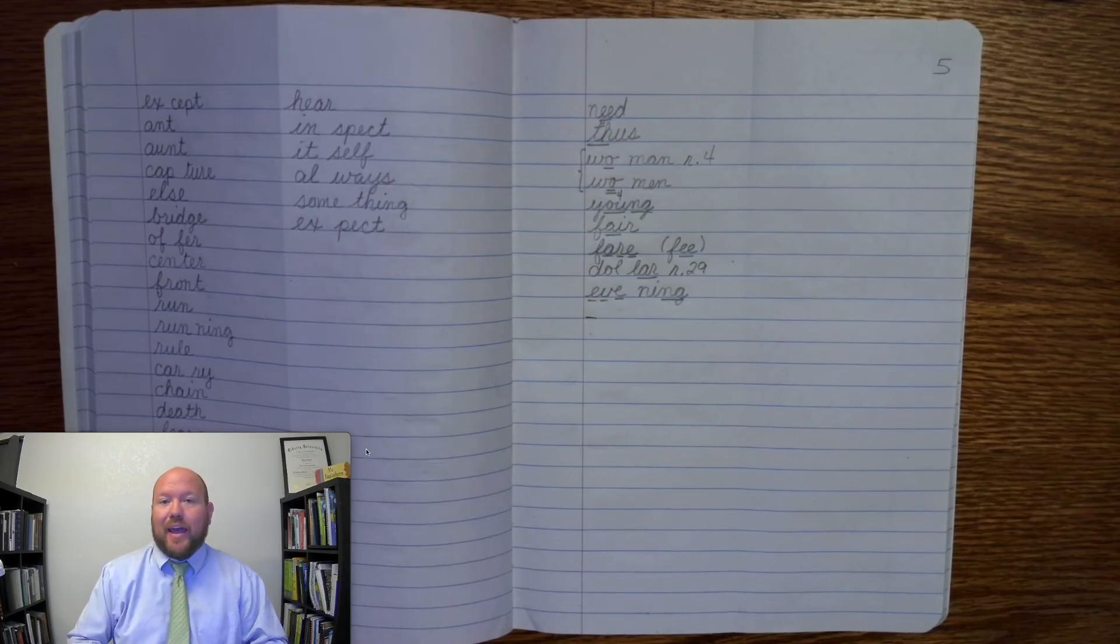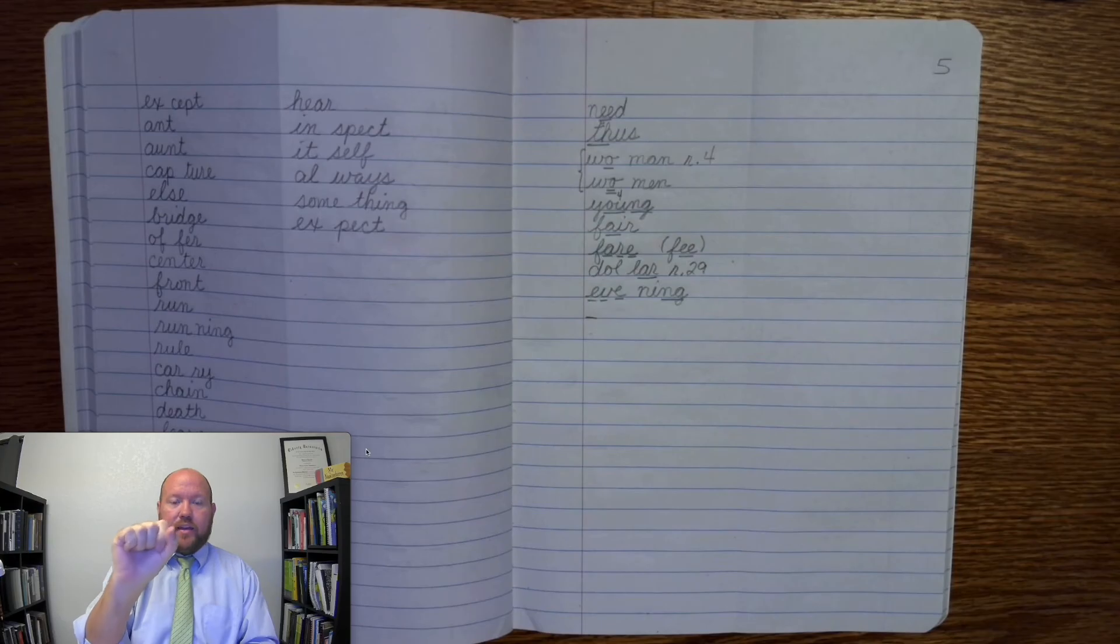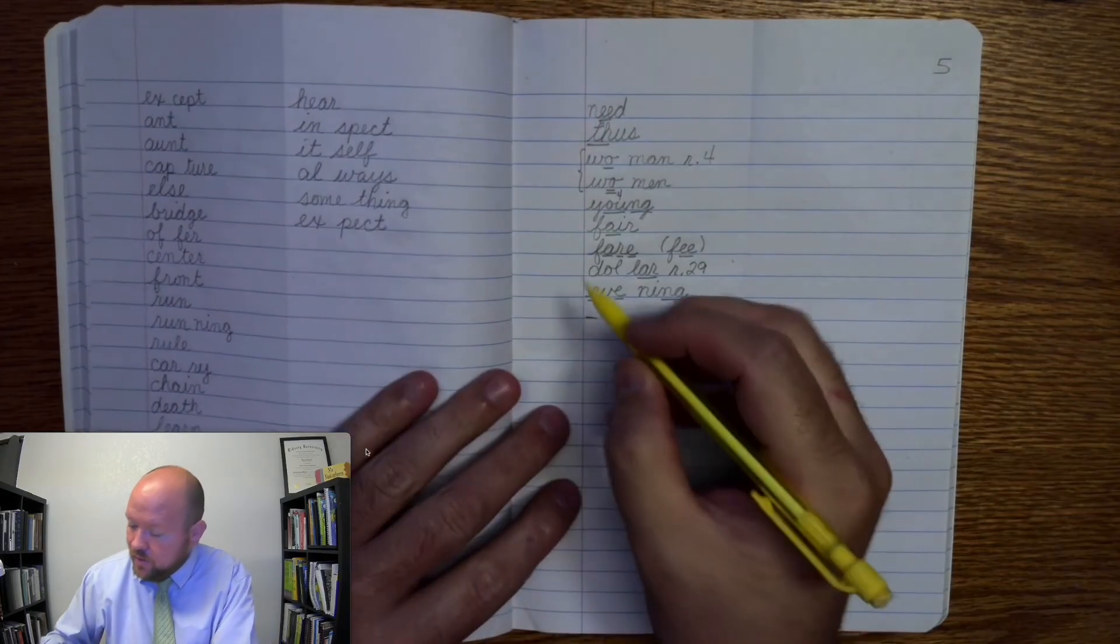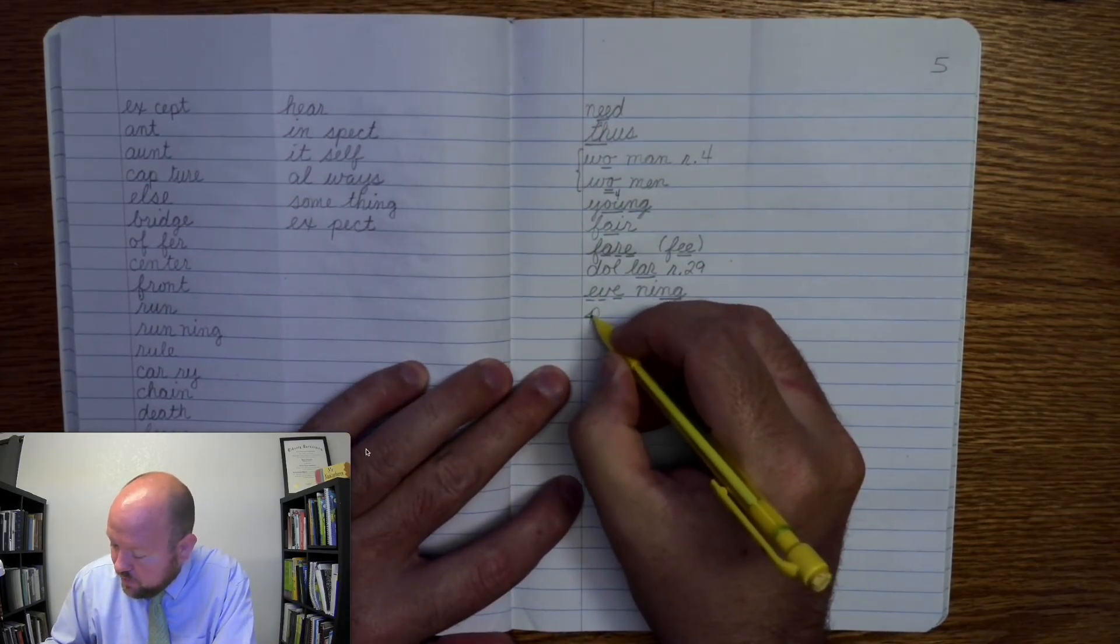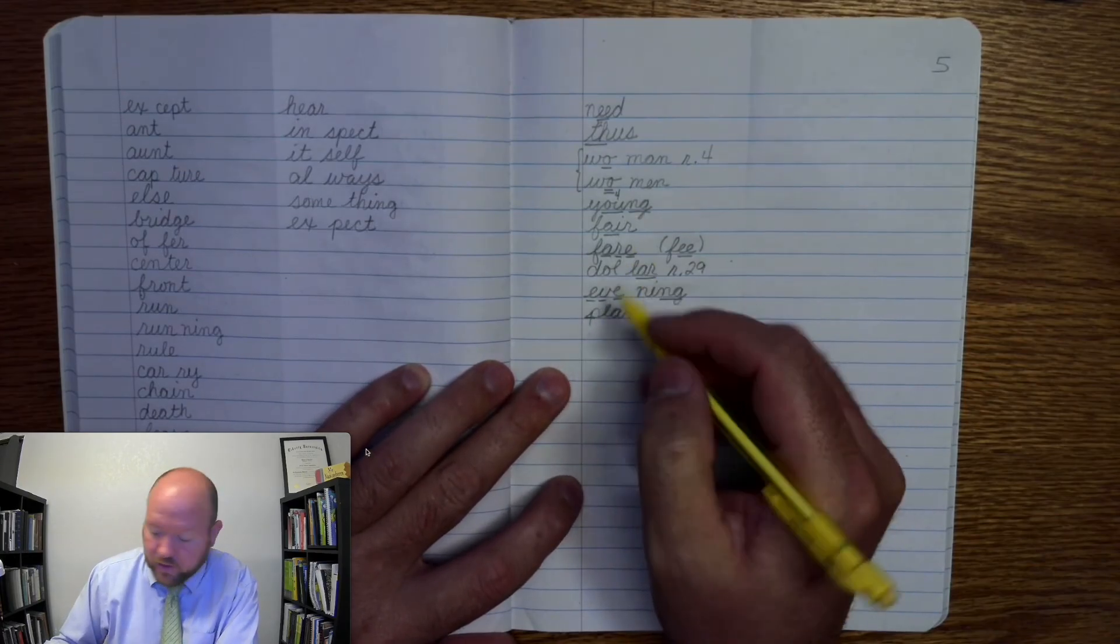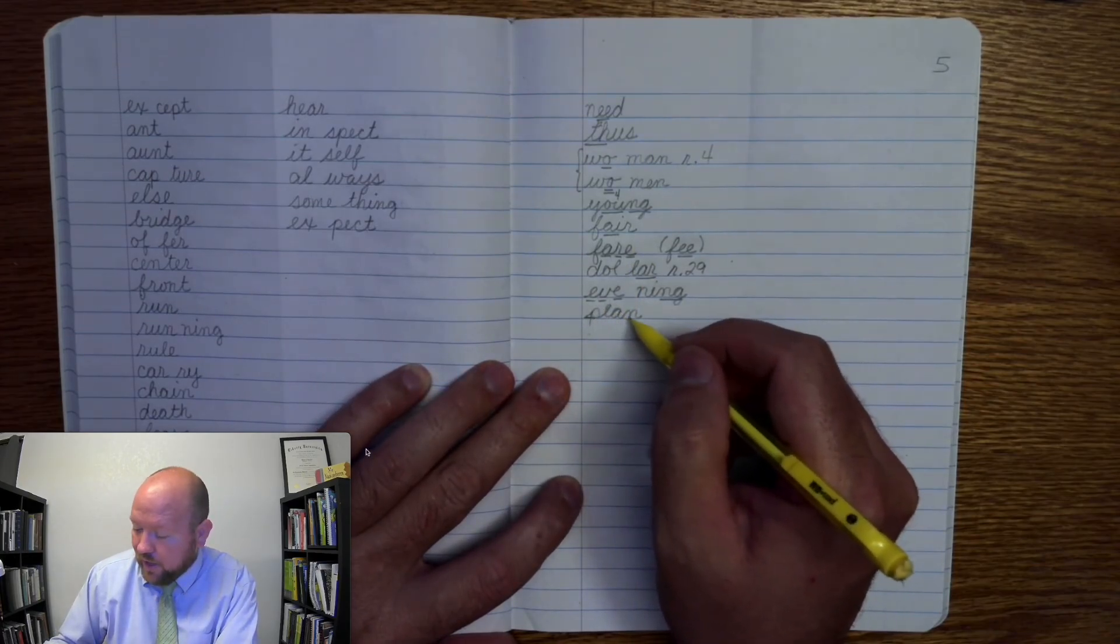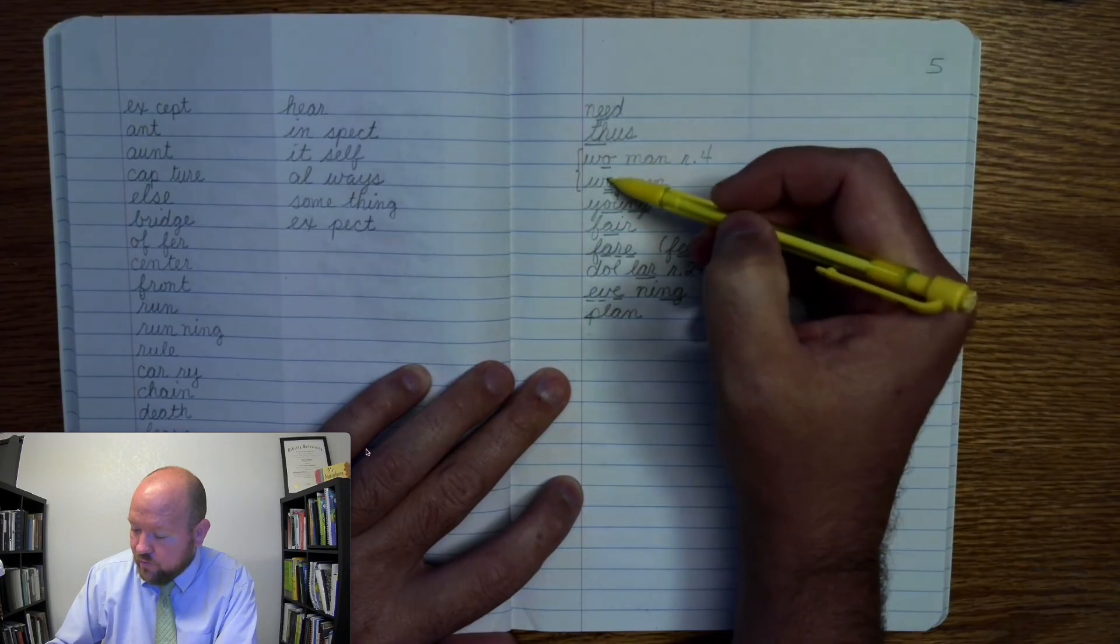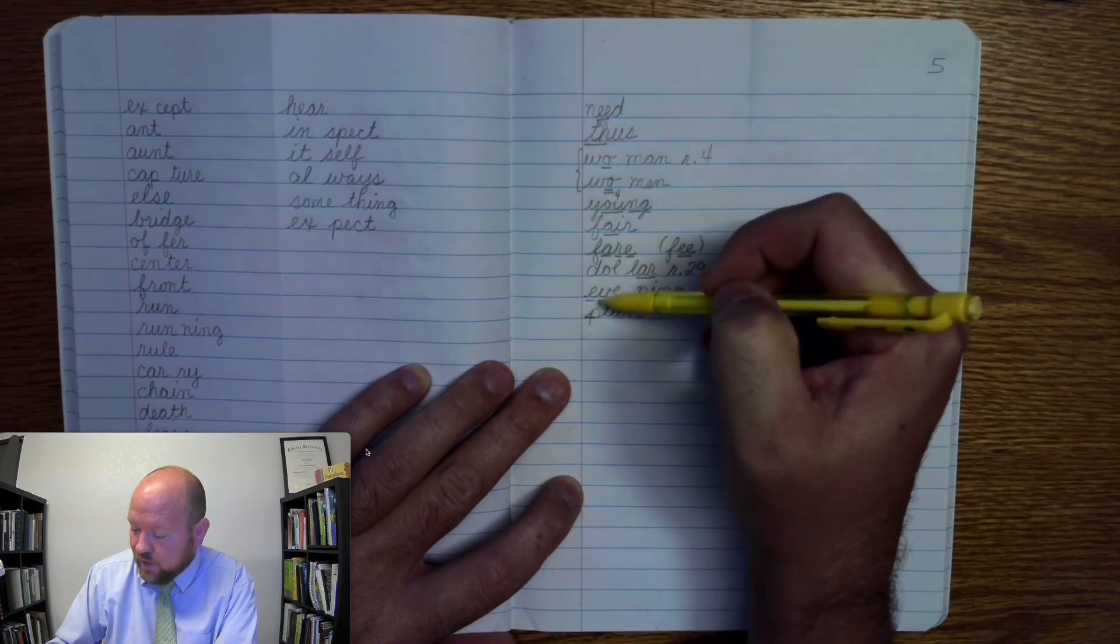The next word is plan. Like make a plan. Plan. Base word plan. P-L-A-N. Plan. Go ahead and write it. P-L-A-N. Markings. P-L-A-N. That is all of our words for the day.